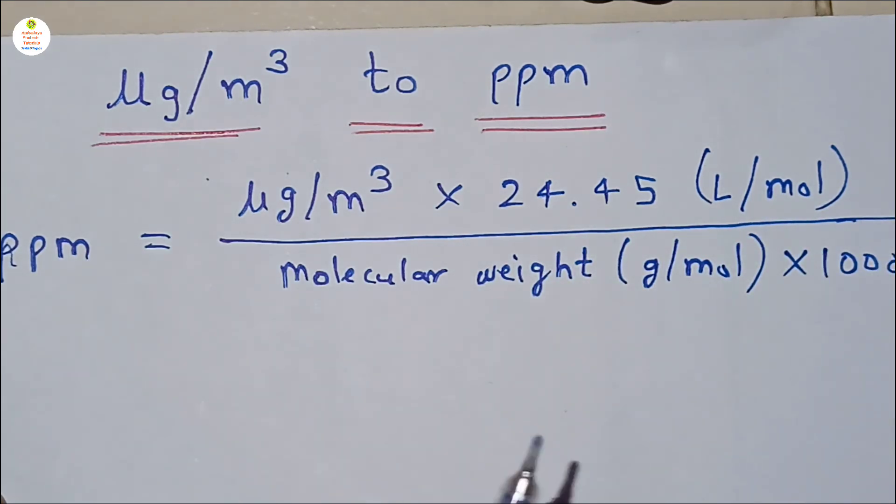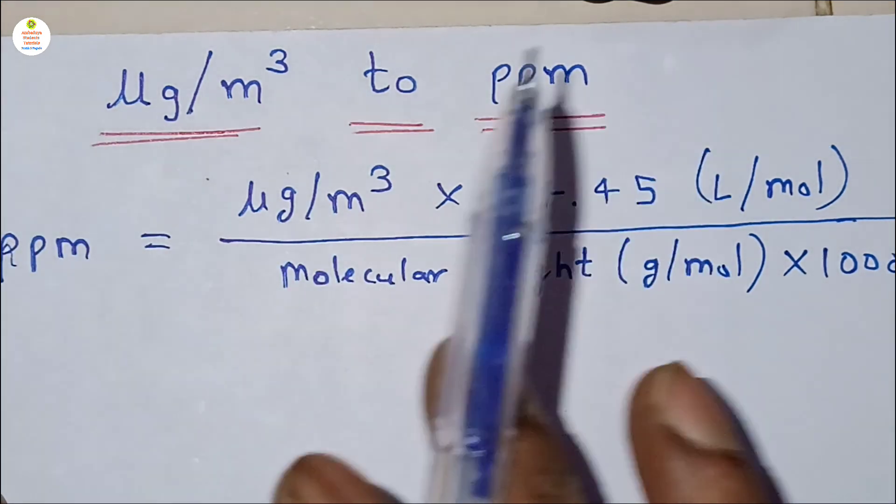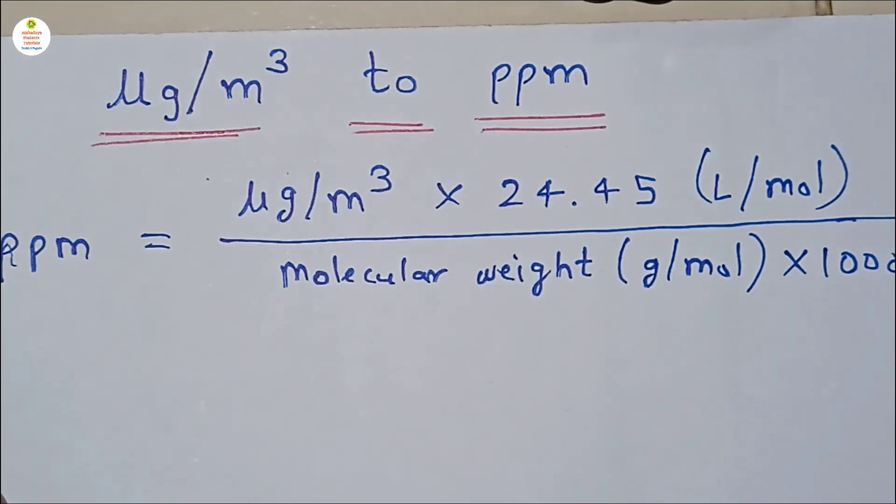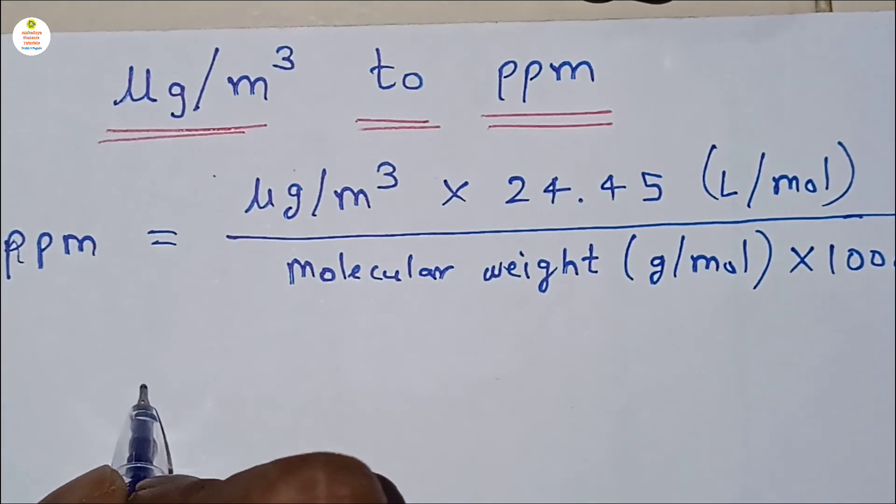And molecular, this is the molecular weight which is in grams per mole. And this 1000 is for conversion of microgram into milligrams for ppm calculation.